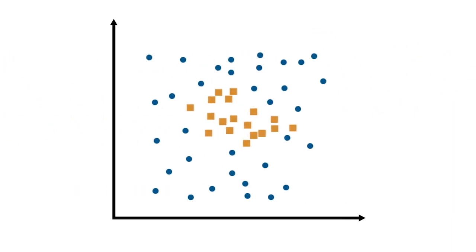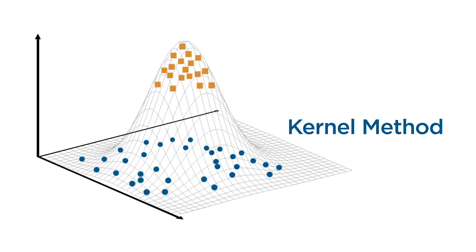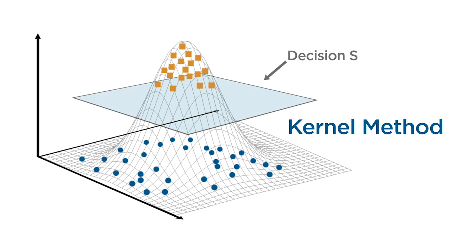What happens when the data cannot be separated by a straight line or hyperplane as shown here? In these situations, you can use a kernel method, which projects the data into an extra dimension. Instead of a decision line, there is now a decision surface that separates the points. This concept can be generalized to higher dimensions.